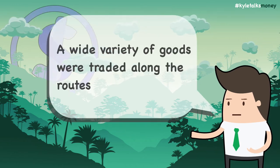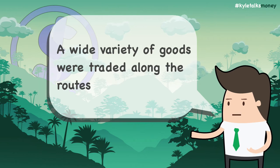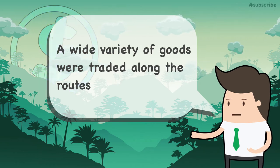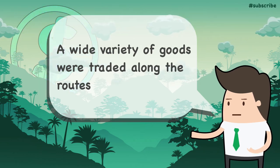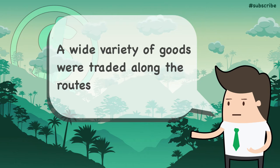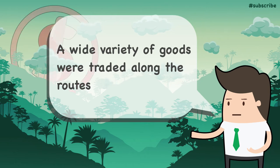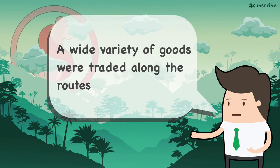Some of the items traded were silk textiles, lacquerware, and porcelain from China; sandalwood from India; saffron, pistachio nuts, and dates from Persia; myrrh and frankincense from Somalia; and glass bottles from Egypt.